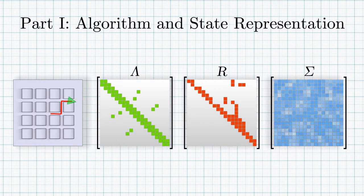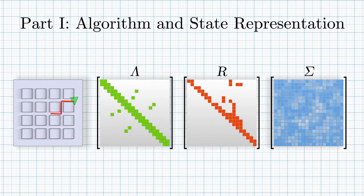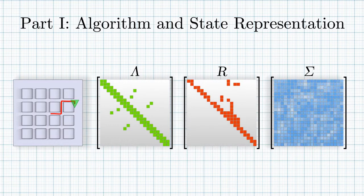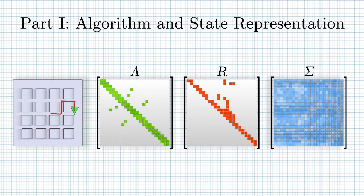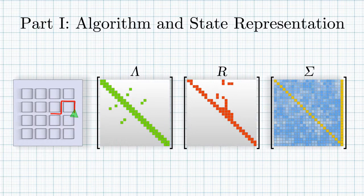If we want to compute sigma, the sparse tricks don't work anymore. Sigma is dense. Fortunately, most applications only require a small number of the covariance elements: the block diagonal and possibly also the last column.